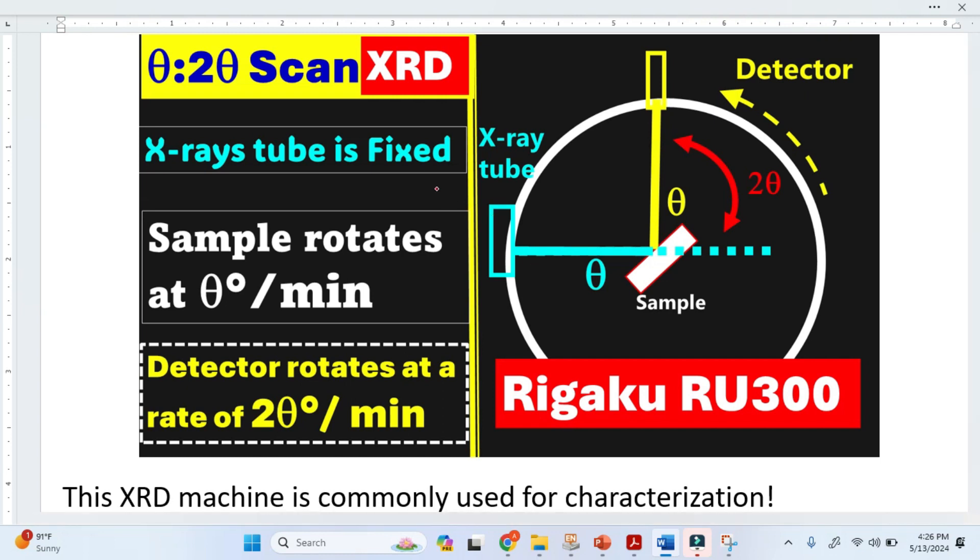As you can see, the sample has rotated to almost 45 degrees, and this 2 theta is almost 90 degrees.